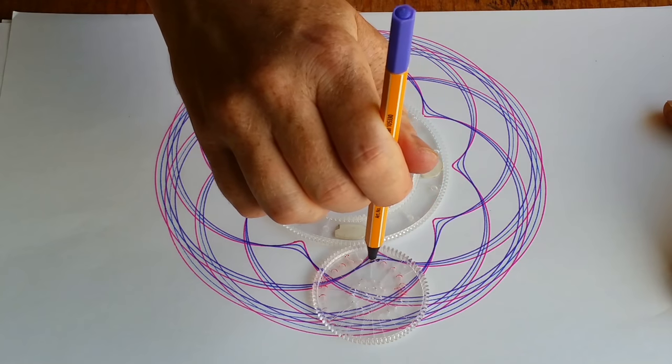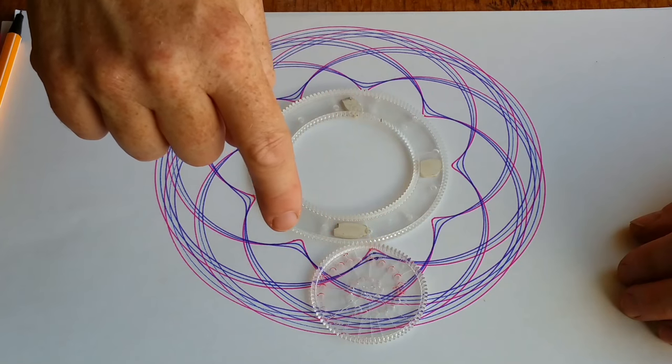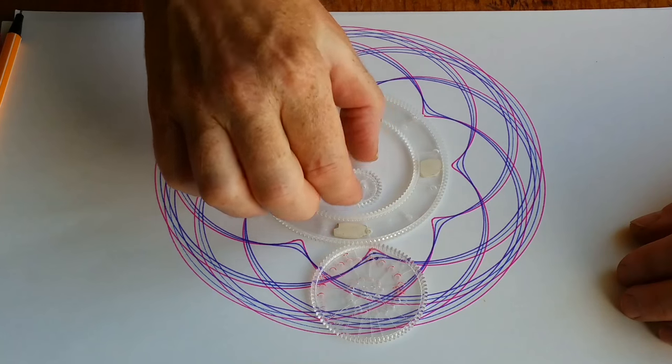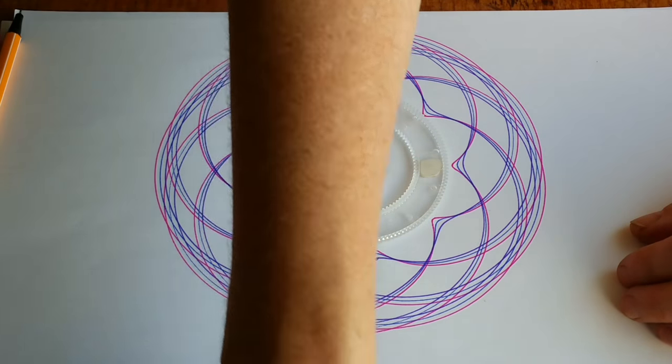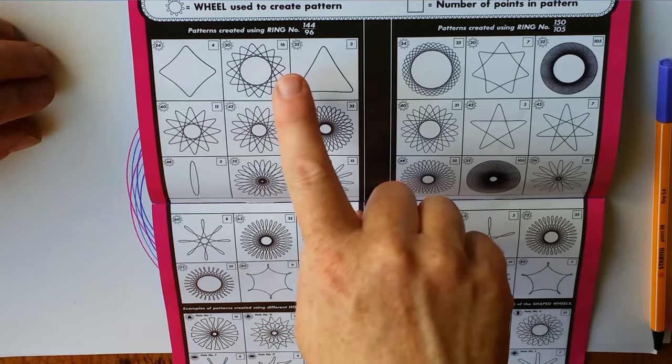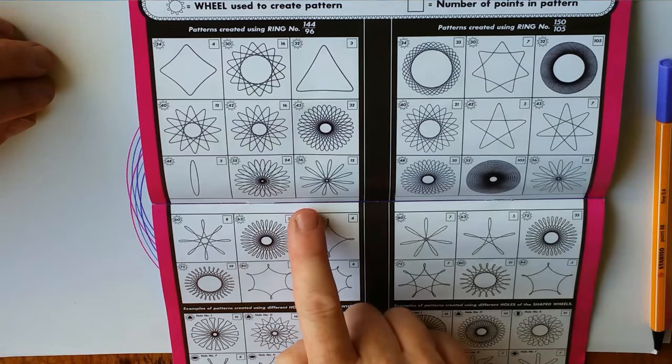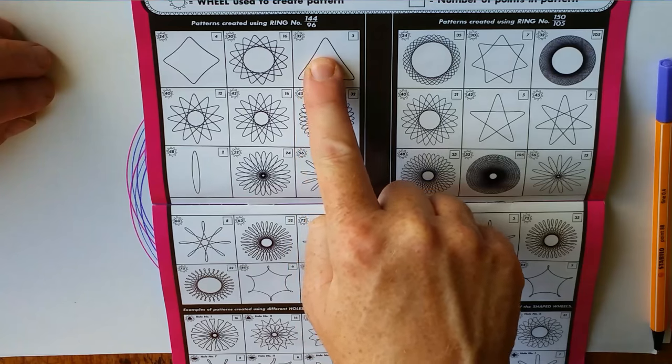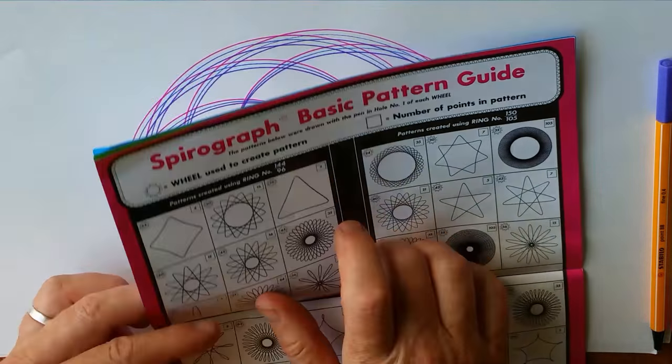Now my epitrochoid has nine points. Suppose I want to make something on the inside that would match it. I'm looking at my pattern guide and I don't see that any of the patterns created inside wheel number 144 or 96 have nine points. But remember wheel number 32 has three points.